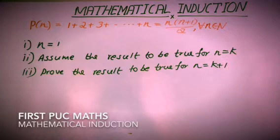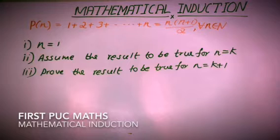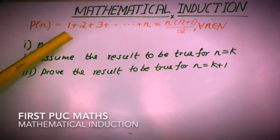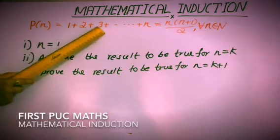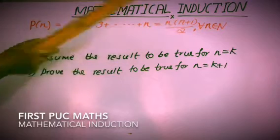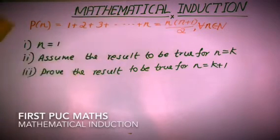Hi everyone, let's consider the concept of mathematical induction. Under mathematical induction, a proposition will be given. For example, P of n is equal to 1 plus 2 plus 3 plus etc. plus n, equal to n(n+1) by 2, for all n belongs to the natural numbers. To prove this proposition to be true for all n, let us follow some steps.